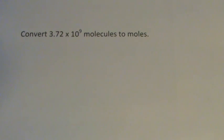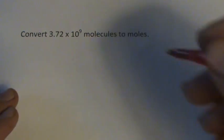This is one that causes problems for a lot of students just because of the division. We've got 3.72 times 10 to the minus ninth, which is a lot smaller than 6.02 times 10 to the 23rd. But let's see what we can do.